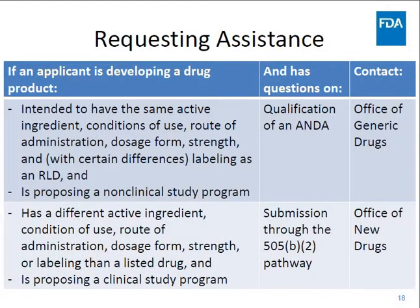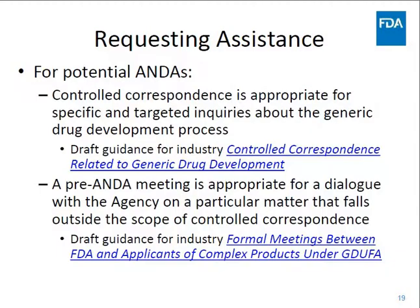If you need assistance from FDA in making this determination, we recommend you contact OGD or OND, the Office of New Drugs, as appropriate. For example, if an applicant is developing a product intended to have the same active ingredient, conditions of use, route of administration, dosage form strength, and labeling as the listed drug, or is proposing a clinical study program and has questions about qualification as an ANDA, they should contact OGD. If an applicant is developing a product that has a different active ingredient, condition of use, route of administration, dosage form strength, or labeling than the listed drug, or is proposing a clinical study program with questions about submission through the B2 pathway, they should contact the Office of New Drugs. Additional information is available on controlled correspondence and pre-ANDA meeting processes.